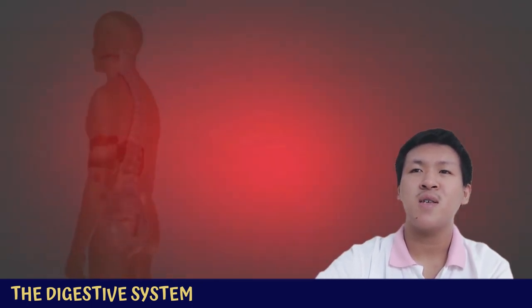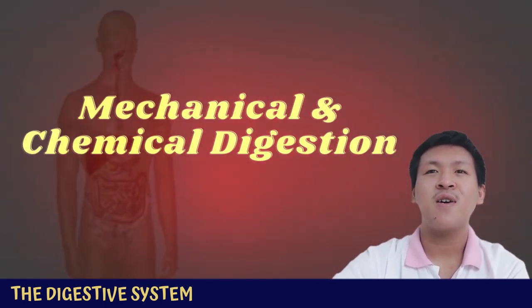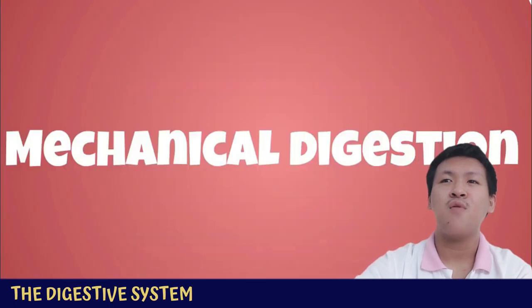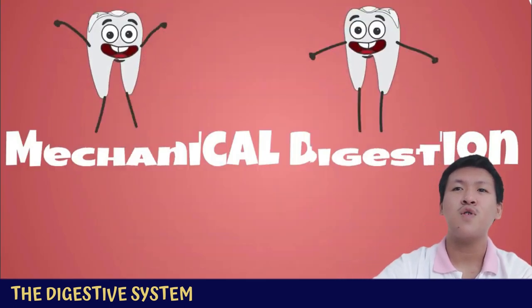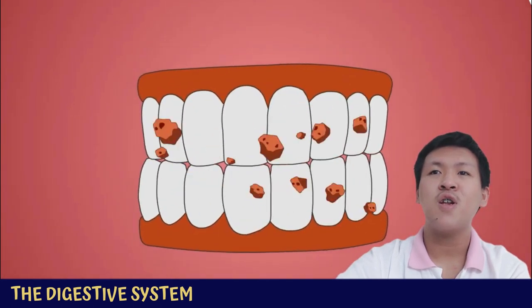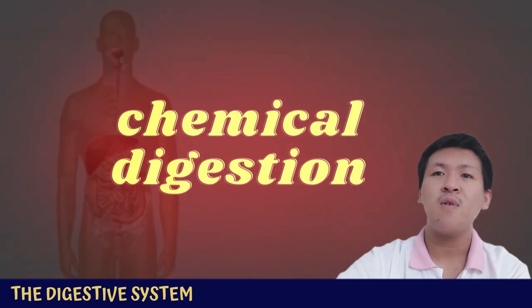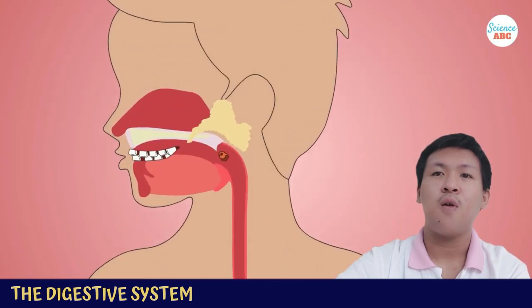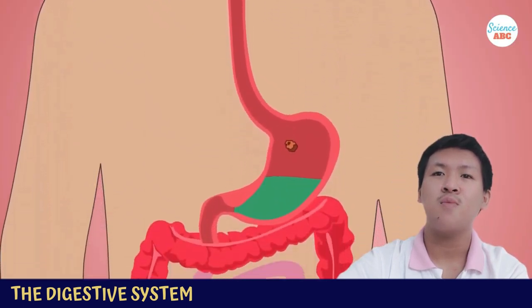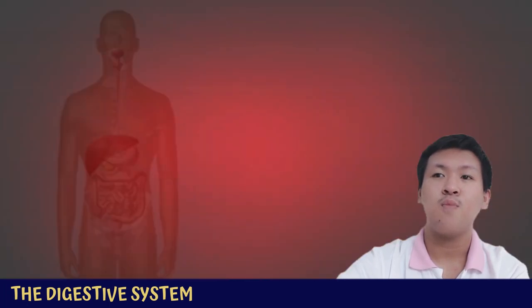Digestion is the process of breaking down food into components the body can absorb. It consists of two types: mechanical digestion and chemical digestion. Mechanical digestion starts in the mouth with mastication and continues with churning and mixing in the stomach. Chemical digestion begins in our mouth with saliva, continues in the stomach, and is completed in the small intestine.